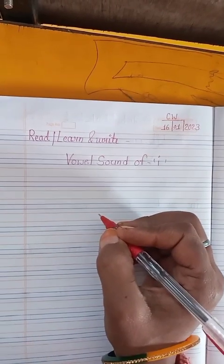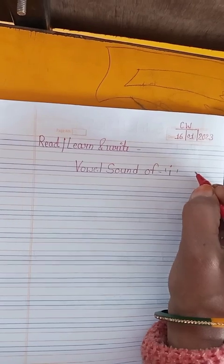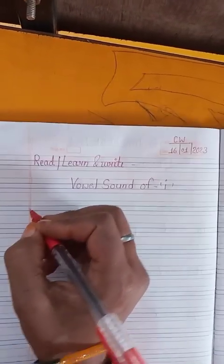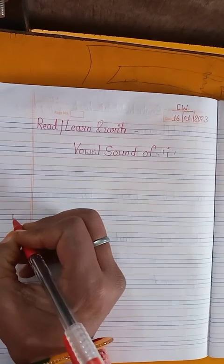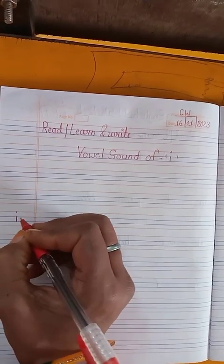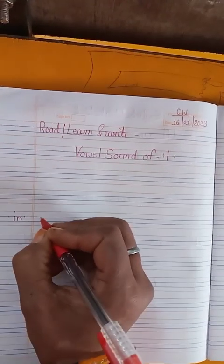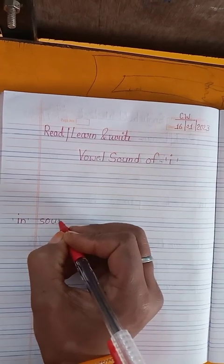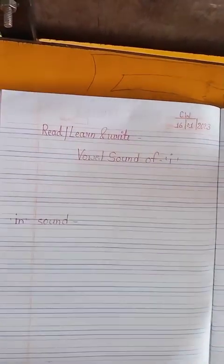Okay, I ka phonic sound hota hai E. I ka phonic sound E, okay? One line leave karenge. Heading after one line leave, right karenge. In sound.